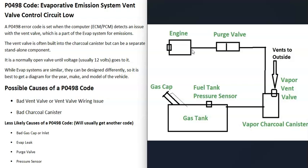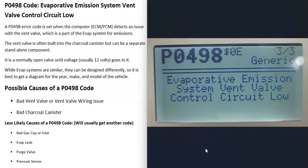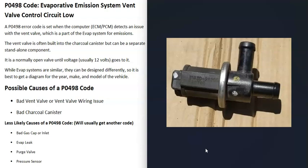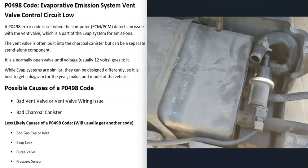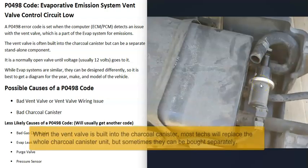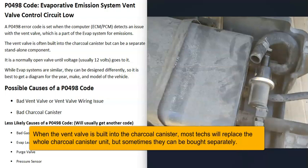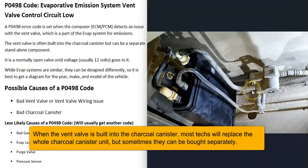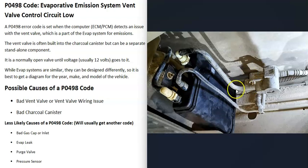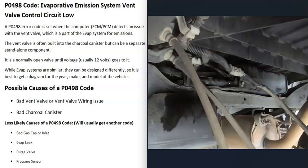That's a basic overview of the EVAP system. If you go to work on your EVAP system, be sure to get a diagram for your specific vehicle. When you get a P0498 code, the computer is seeing some kind of problem with the vent valve. These vent valves can be built into the charcoal canister — that's very common — or they can be separate but mounted very close to it. The charcoal canister and vent valve will be located up underneath the vehicle by the gas tank.